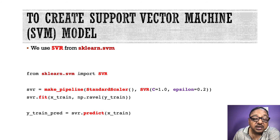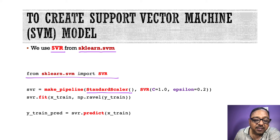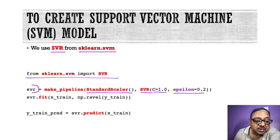Just like we created the linear regression and random forest models, we can create the support vector machine model. For this we require the library sklearn.svm, and inside that a function called SVR — support vector regressor. We import this library. Then, just like with random forest, we first scale using StandardScaler and then build the model using SVR. SVR can take parameters — as discussed in the section on support vector machines — which tune the model. We then call fit to build the model and predict to make predictions.